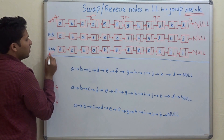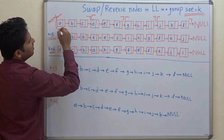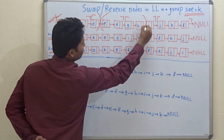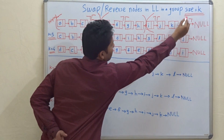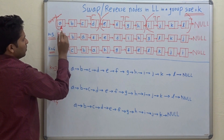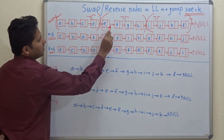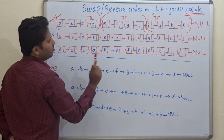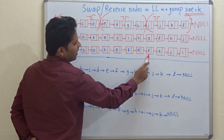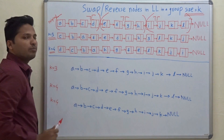Now if k is equal to 4, obviously we have to group the original linked list in 4 nodes each. So 4, then these 4 and the last 4 nodes. Let's reverse the nodes in these groups. So ABCD will become DCBA, then EFGH will become HGFE and IJKL will become LKJI and the last node will point to null.